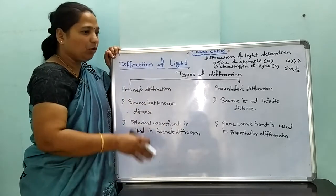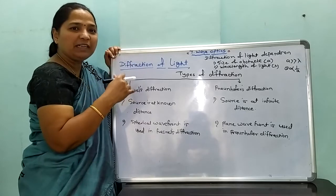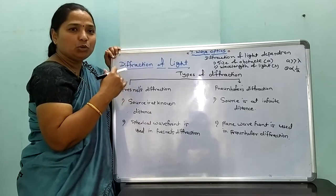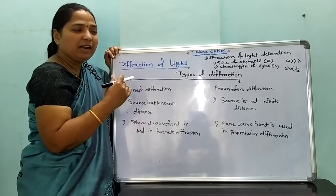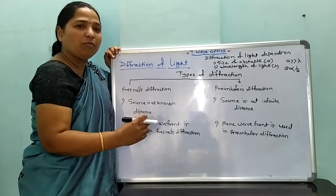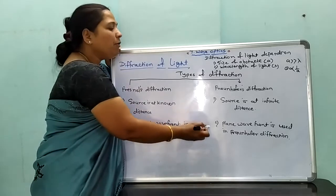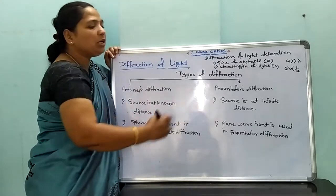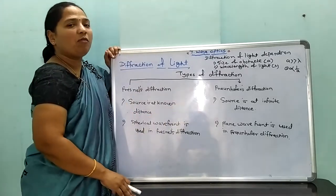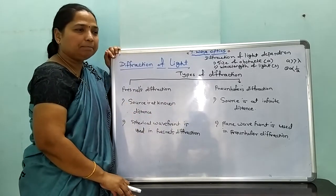Because of the parallel beams coming from the source at infinite distance, a plane wavefront is obtained. Hence, a plane wavefront is used in the Fraunhofer diffraction pattern.